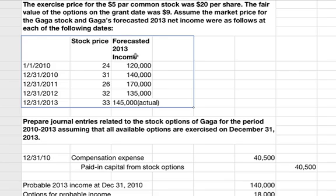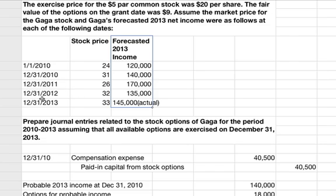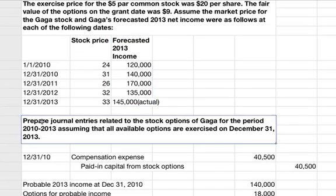This is the forecasted income, so this does matter, and these are the dates. The actual problem is to prepare the journal entries related to these stock options of Gaga for the period 2010 to 2013, assuming that all available options are exercised on December 31st, 2013.